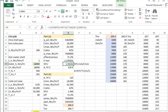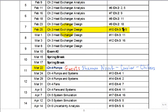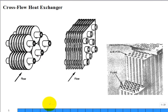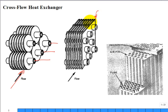Let's march through heat exchangers and get into it. Last time we talked about a shell-and-tube heat exchanger and solved that problem. A lot of heat exchangers are cross flow. Fluid may go inside the tubes, and another fluid crosses the tubes. The tubes can be finned — by circular fins, or by plate fins.